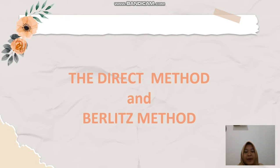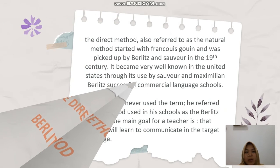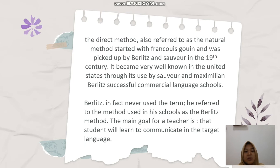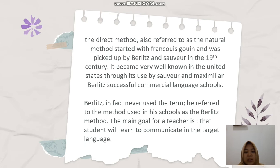The last is the direct method and Berlitz method. The direct method, also referred to as the natural method, started with French sources and was picked up by Berlitz and Sauveur in the 19th century. It became very well known in the United States through Sauveur and Maximilian Berlitz's successful commercial language schools. Berlitz, in fact, never used the term — he referred to the method used in his school as the Berlitz method. The main goal for a teacher is that students will learn to communicate in the target language.